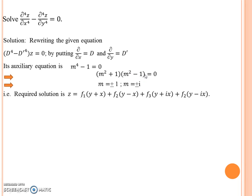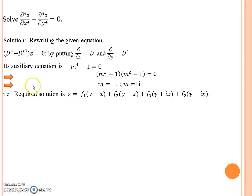Now consider the example equation. We need to find the solution of this equation because the right-hand side is 0. So the particular integral (PI) of this equation is also 0, and therefore the complementary function (CF) is the complete solution of this equation.